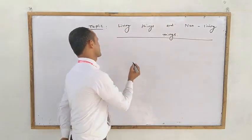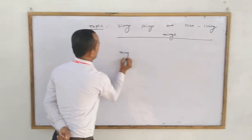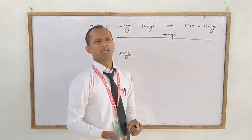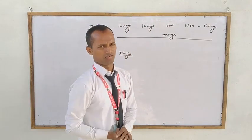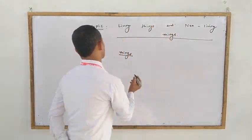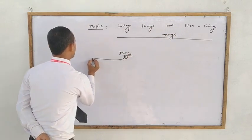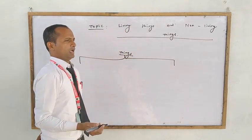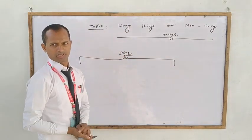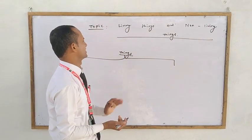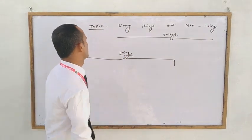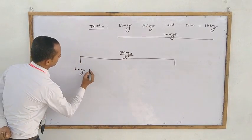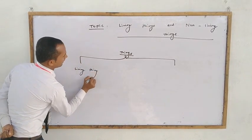These things that we can see and observe are found at every place on our earth and in our universe. These things are classified into different groups depending on different modes of classification. Generally, things are divided into living things and non-living things.